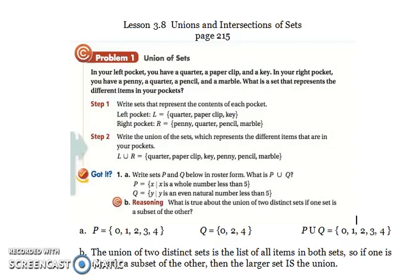It says less than five. So P is the set zero, one, two, three, four. Q is an even natural number less than five. Okay. And I blew that because zero is not a natural number. Sorry. So the even natural numbers less than five would be two and four.